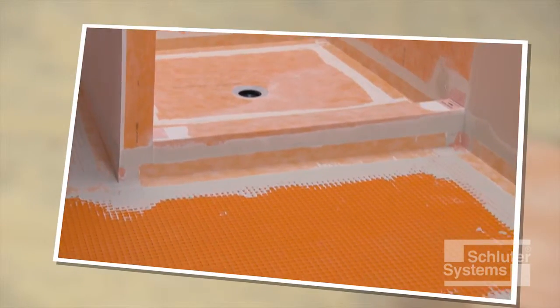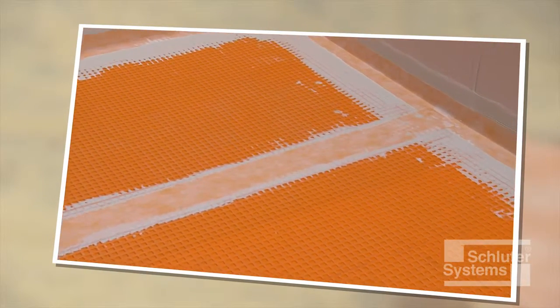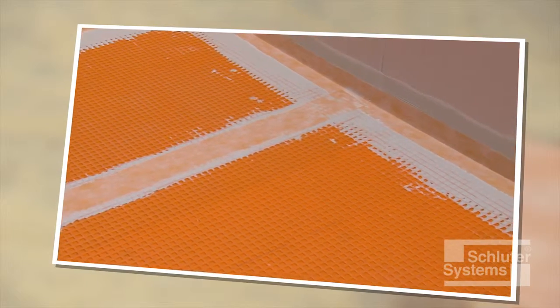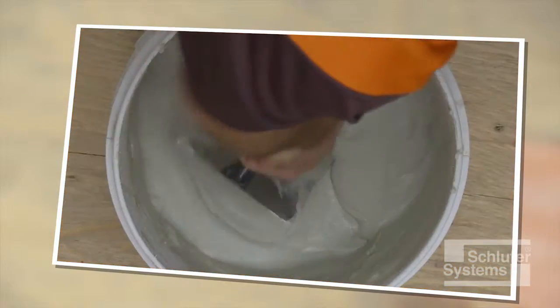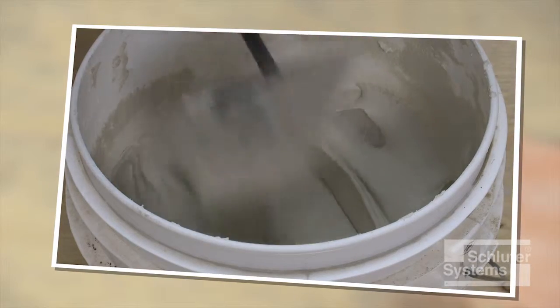Schluter-DITRA waterproofing accessories are used to seal joints in the DITRA matting and connect the matting to the walls and shower assembly. The KERDI accessories are installed using unmodified thin-set mortar.